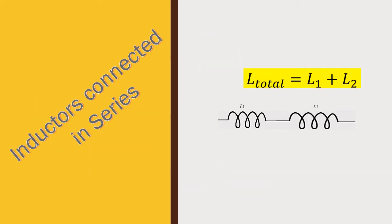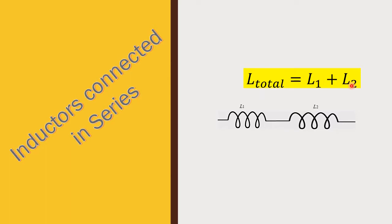Next, we are going to see when two inductors are connected in series. What is the total inductance? Here, first inductor of inductance L1 and second inductor of inductance L2 is connected in series. The total inductance is equal to L1 plus L2. This is similar to resistance.